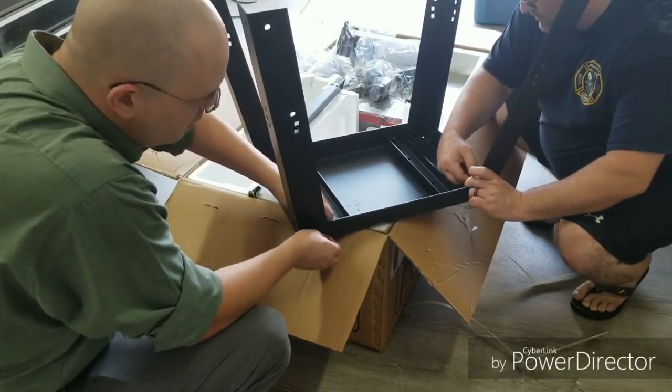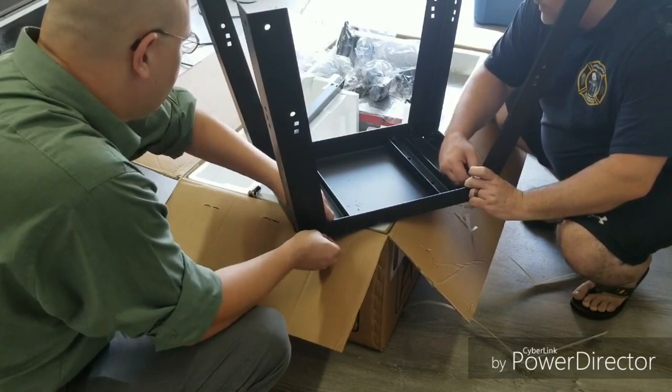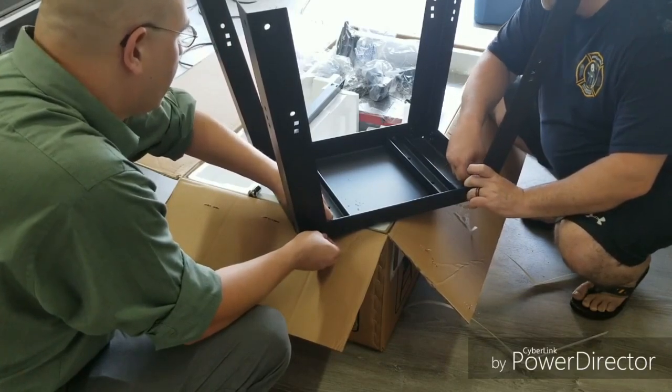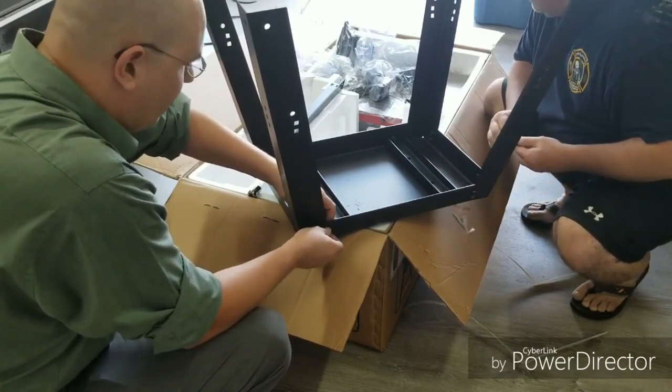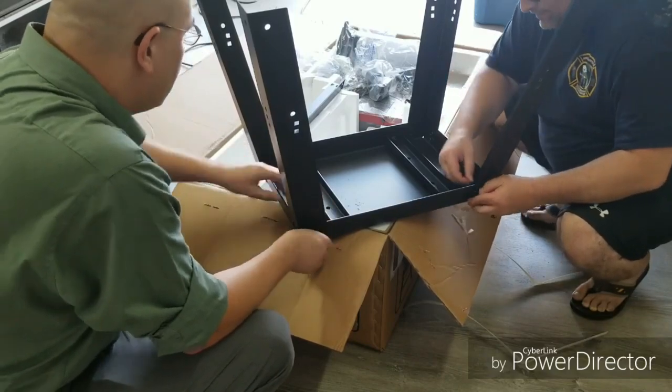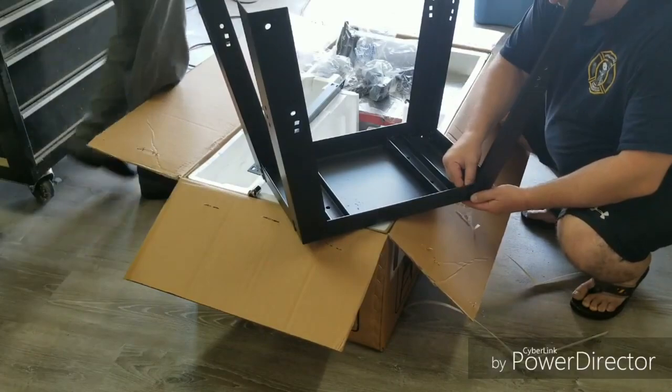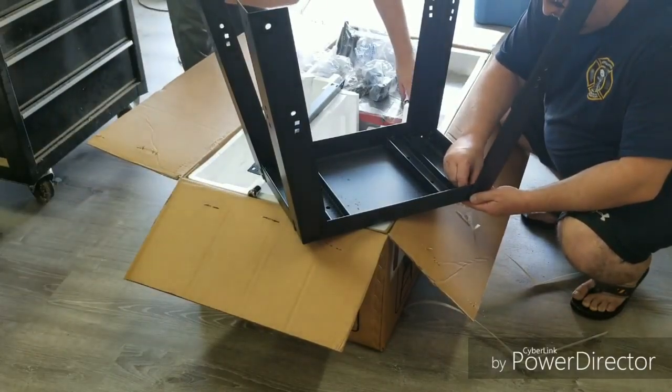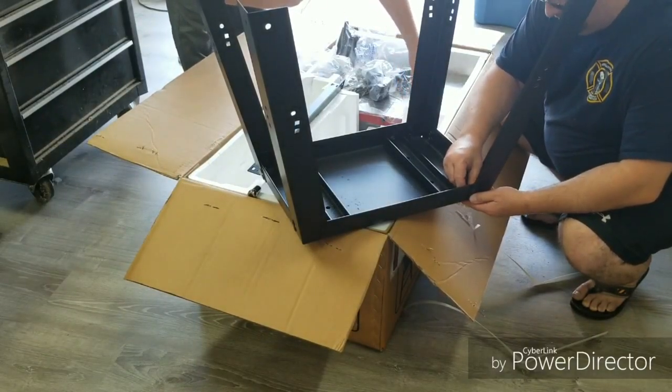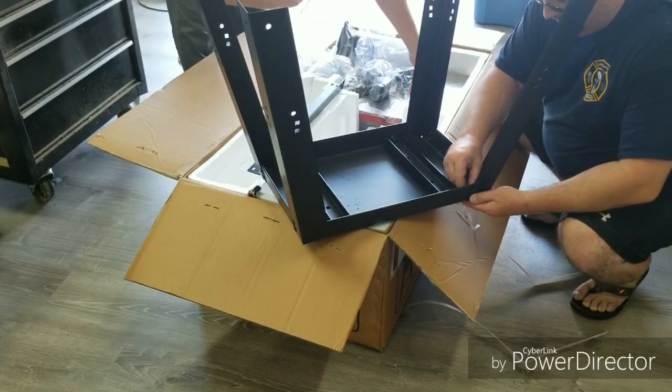How much does this bandsaw weigh? The box is around 200 pounds, so the bandsaw itself is the majority of that weight. It's all cast iron, cast iron table, so they build it to last.